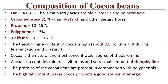Composition of cocoa beans: fat 54–68%, with the three main fatty acids being oleic, stearic, and palmitic acids. Carbohydrates 31%, mainly starch and other dietary fibers. Proteins 10–15%. Polyphenol content 3%. Caffeine 0.1–0.7%. The theobromine content of cocoa is very high — above 2.8% — and is lost during fermentation and roasting.